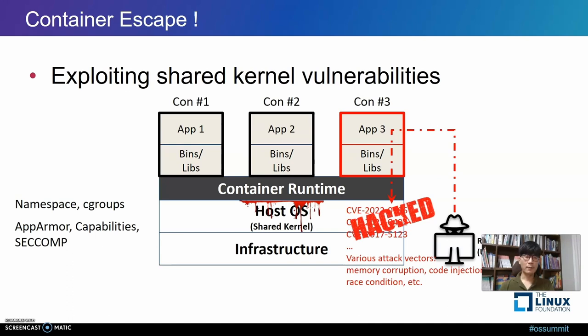Let's talk briefly about the container escape scenario. Suppose the kernel has a buffer overflow vulnerability. First, a remote attacker with access to container number 3 exploits the remote code execution bug of application 3 to execute a kernel exploit code. Then, part of the exploit code could be executed with root permissions. An attacker could then use privilege escalation to disable security settings for the post-exploitation procedure or execute a backdoor.